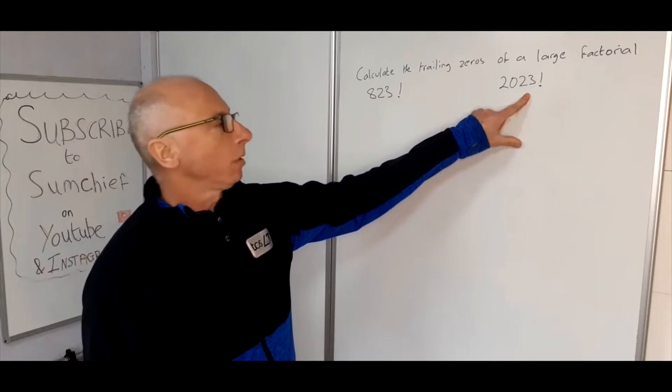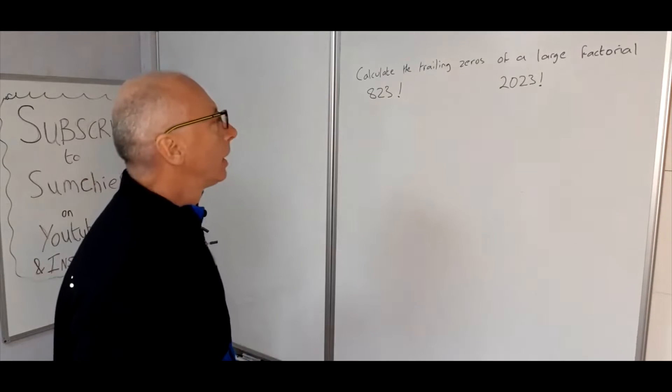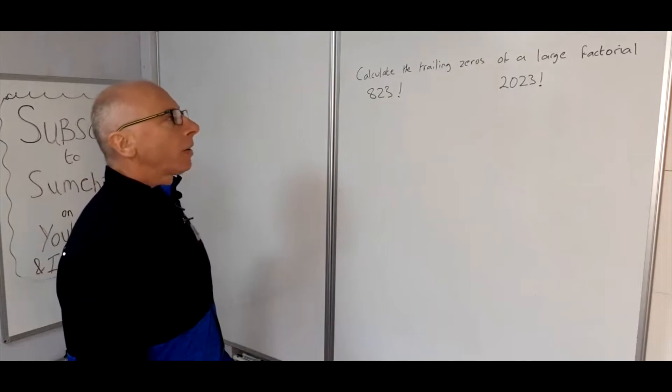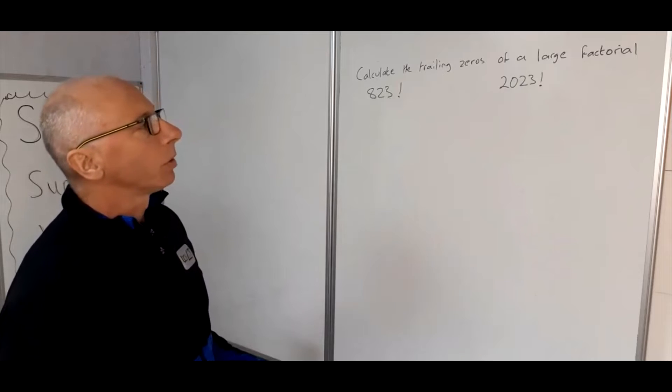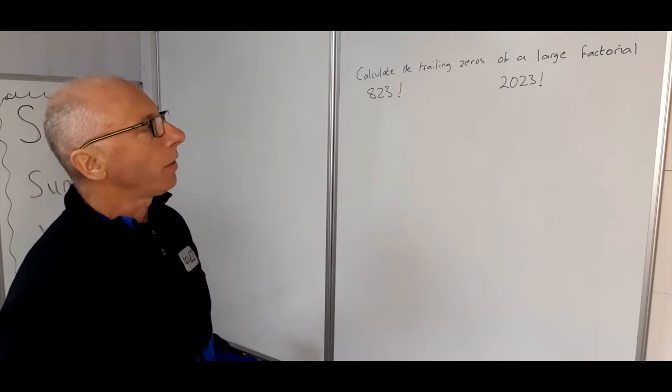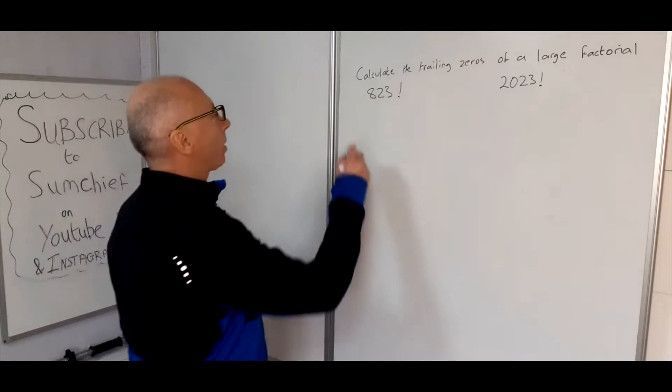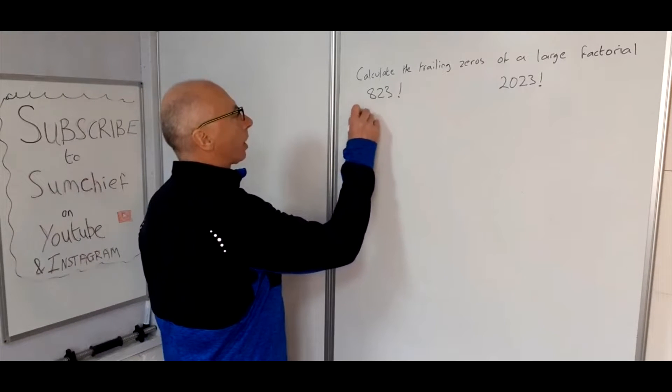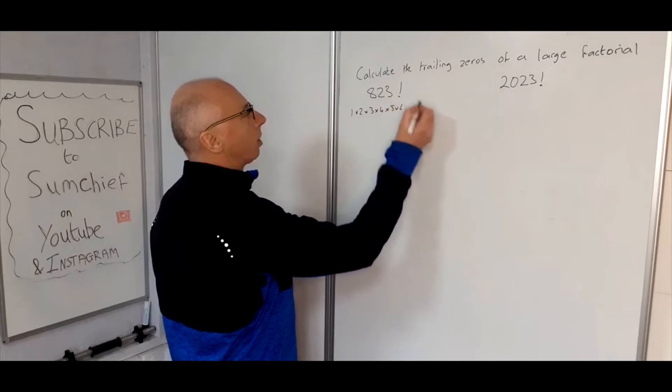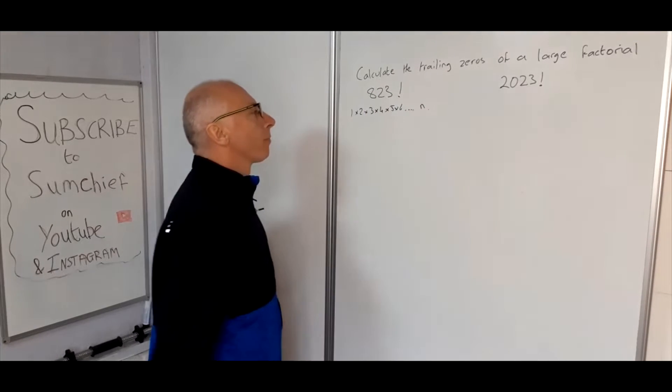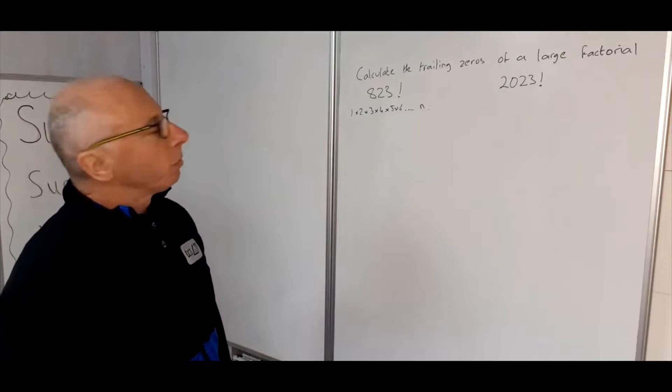This one is going to be miles bigger than that. So to calculate the trailing zeros, we're going to need some sort of formula. Now we're looking at a factorial number, we know that it's 1 times 2 times 3 times 4 times 5 times 6, all the way up to n.